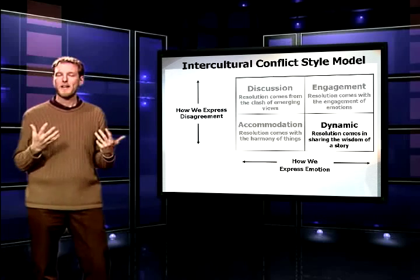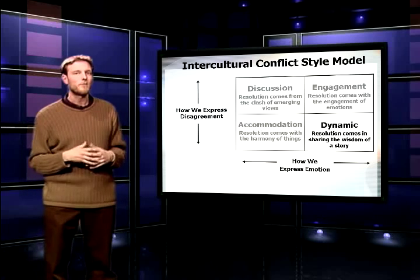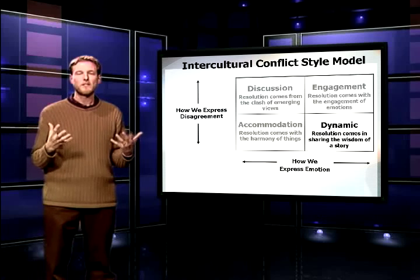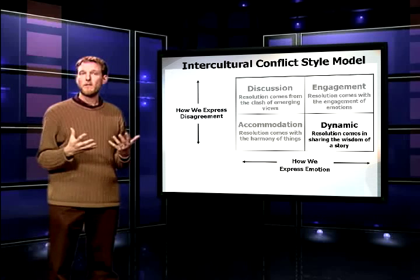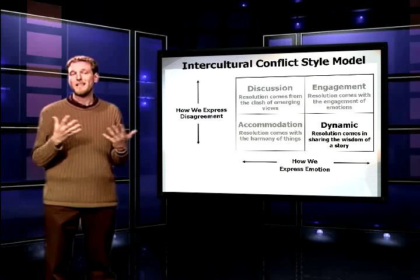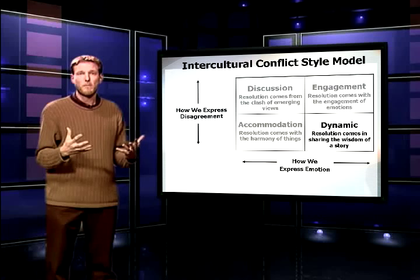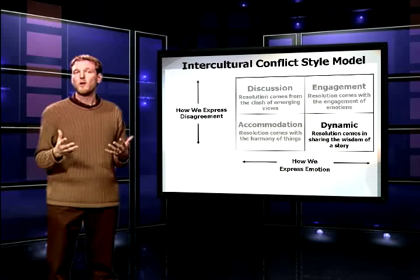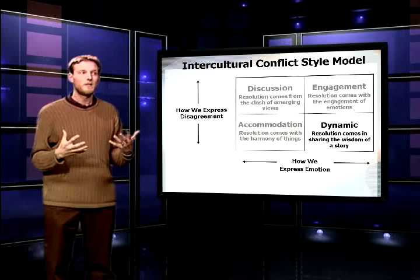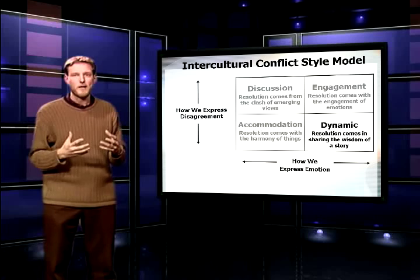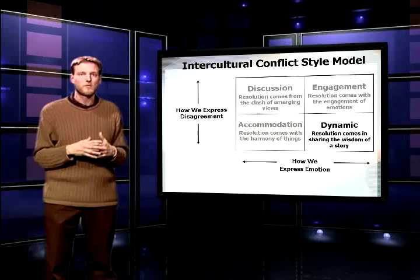The final quadrant is the dynamic style — someone who is expressive while also being indirect in explaining what the disagreement is about or their experience with it. Resolution here often comes in the form of a story; they might use an idiom or an example to convey things indirectly while still bringing their emotions. There's an Arab quote: 'It's better to know the truth but to speak of palm trees.' A dynamic person might be more comfortable having a third party come in to mediate or to look at alternative ways to resolve the situation.